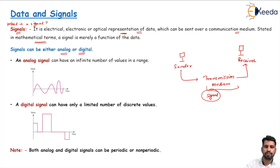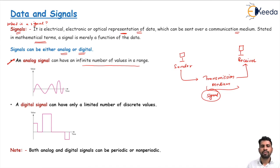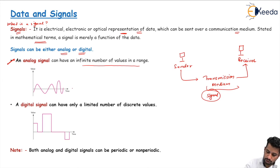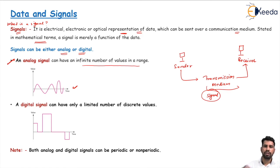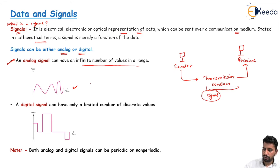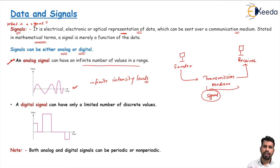Signals can be of two types: analog signals or digital signals. Analog signals can have an infinite number of values in a range. Just as analog data takes on continuous values, an analog signal also has an infinite number of values in a range. When we are speaking, our amplitude or frequency is sometimes very low or very high — we have continuous, infinite intensity levels in our signal. We can define a range from low frequency to high frequency.